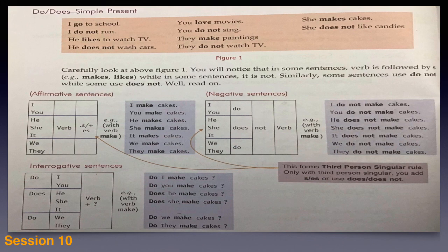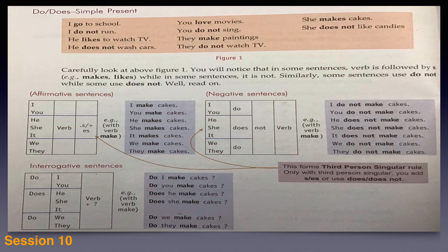The verb comes in place of the subject, and do or does comes forward, followed by the subject, then the verb, then the question mark. Examples: Do I make cakes? Do you make cakes? Does he make cakes? Does she make cakes? — note, with he and she, 'does' is used. And for we and they: Do we make cakes? Do they make cakes? So this is how do, does, or S with the verb is used.